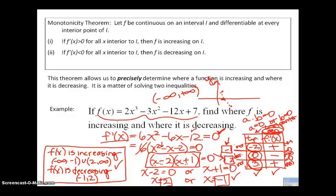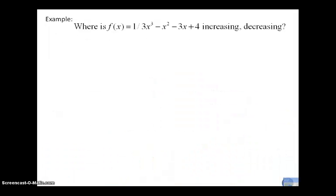So there's several steps involved in this process, so I want to make sure that we can do those. So where is f of x, and here's a different function, increasing, and where is it decreasing? So let's do the same process. The first thing that I would expect to see a student do is find the first derivative function. And that is the 3 pops down front, 1 third times 3 is 1, so that just leaves me an x squared minus 2x minus 3.